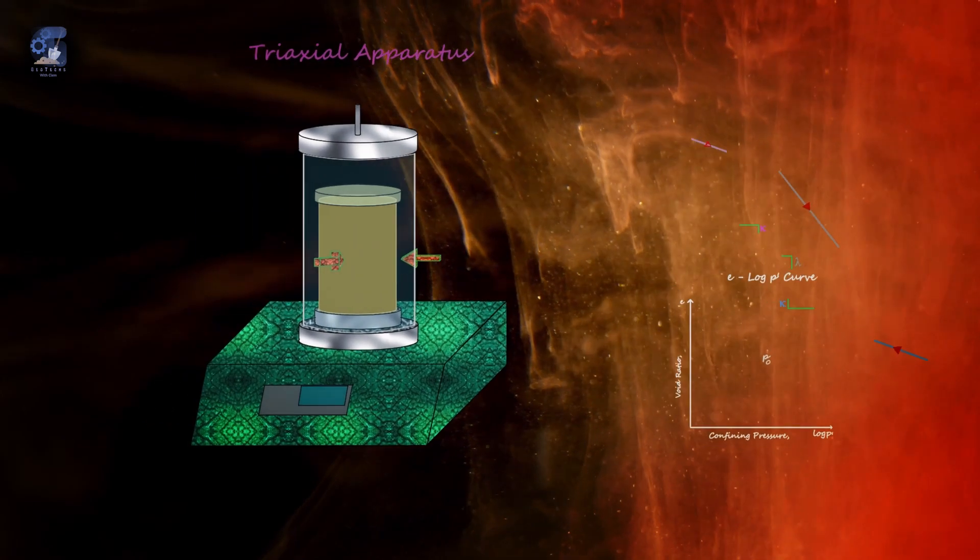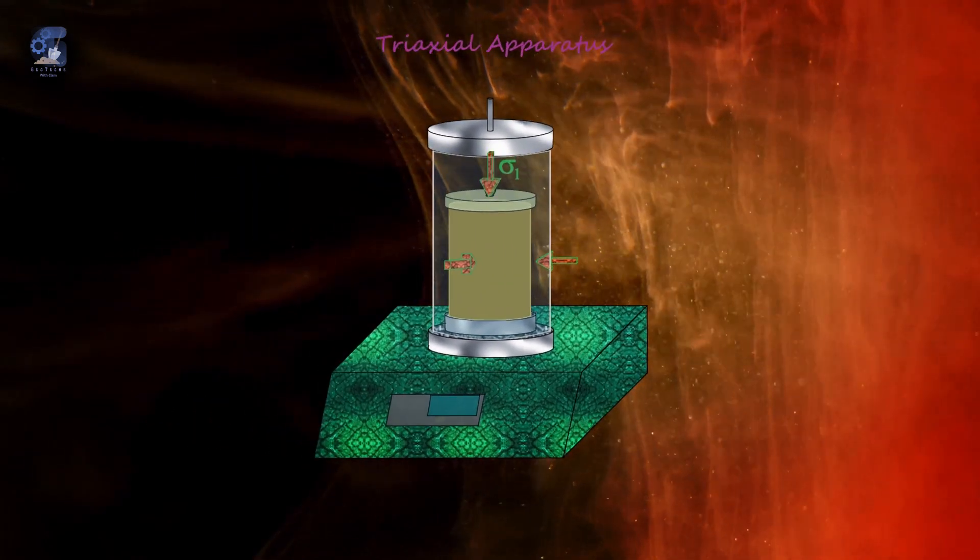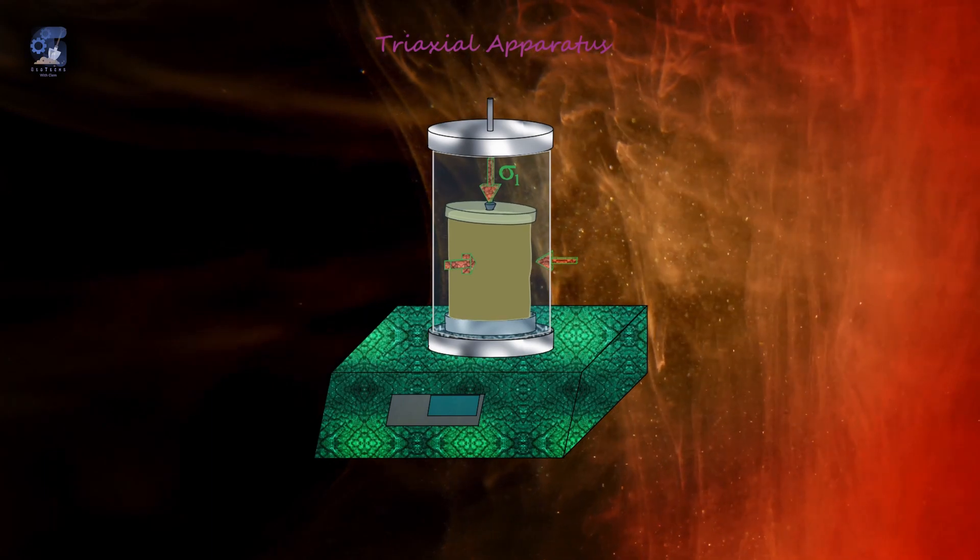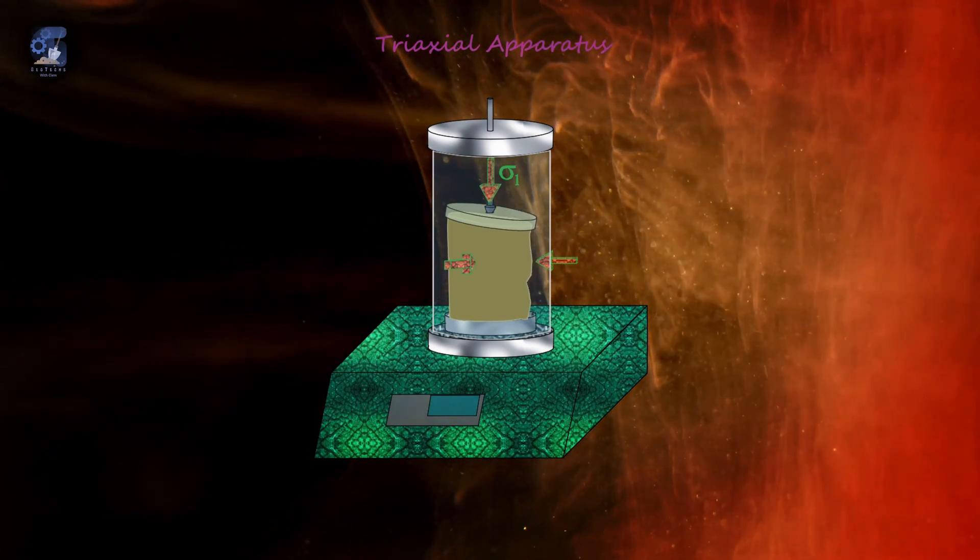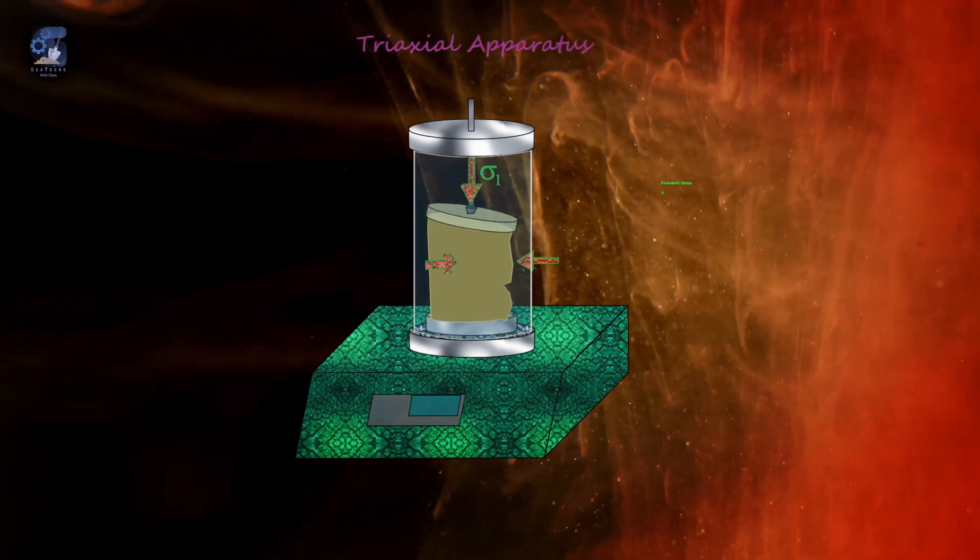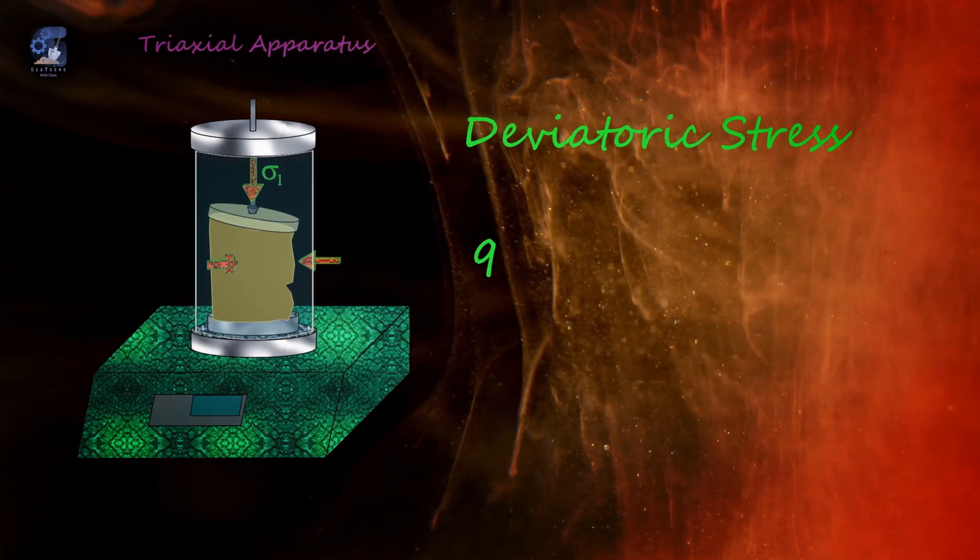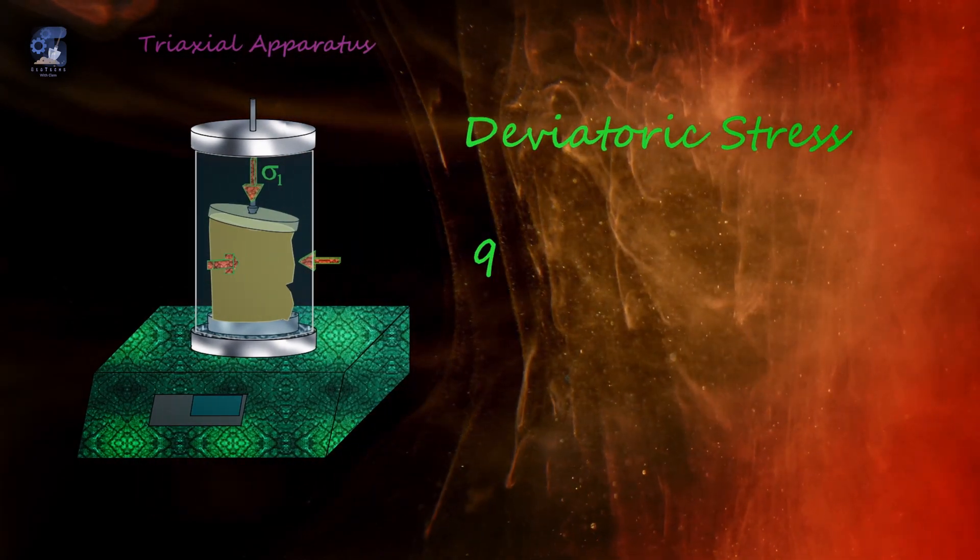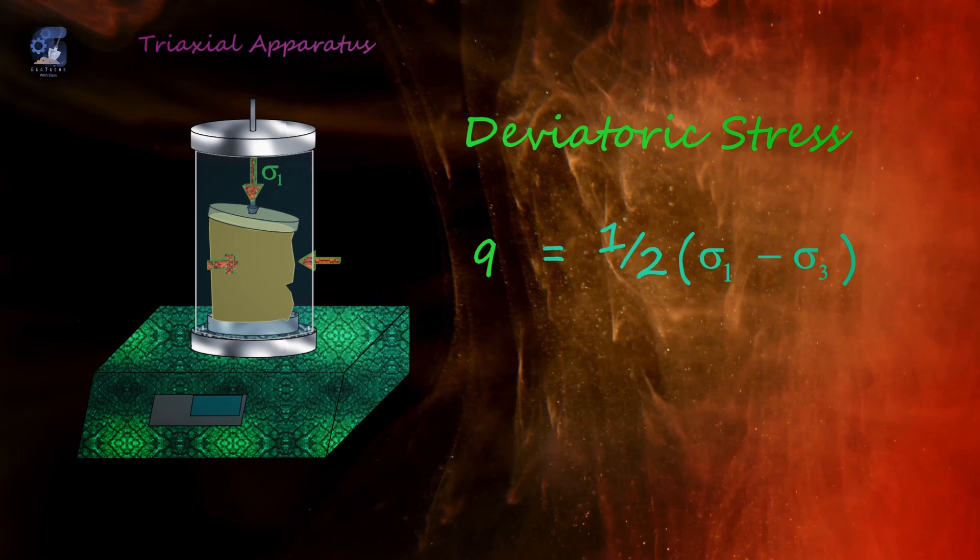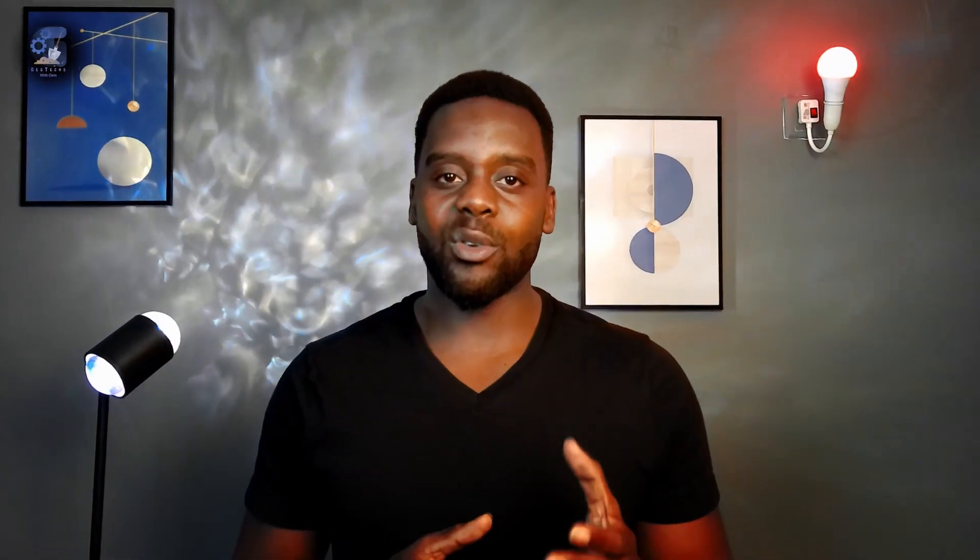Now, by increasing sigma-1, shape distortions will start to occur. The quantity of this distortion stress is called the deviatoric stress represented by Q, which is half of sigma-1 minus sigma-2. So, our triaxial stress state can be decomposed into stresses which cause change in volume and stresses which cause shear distortion.